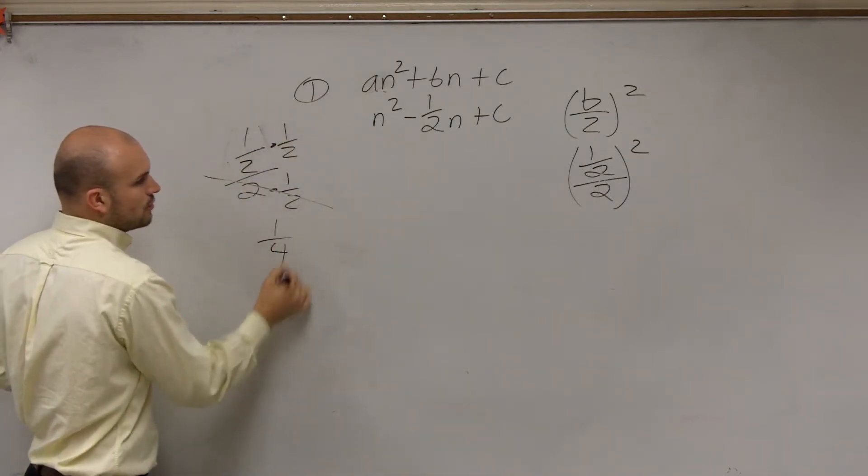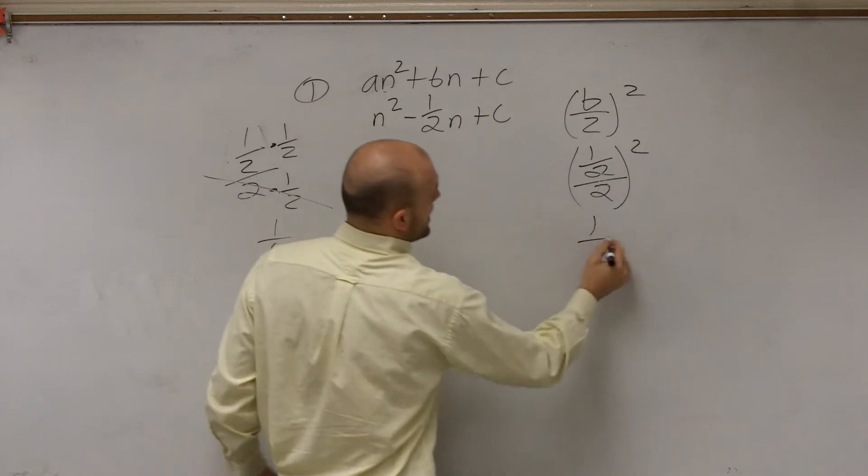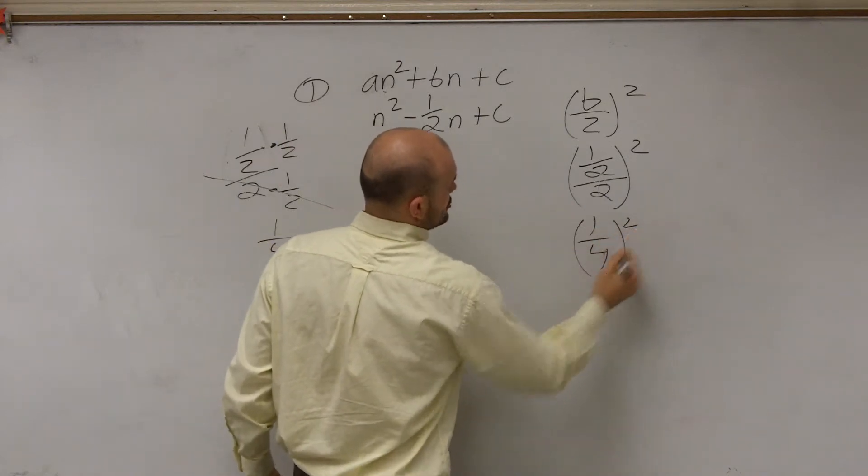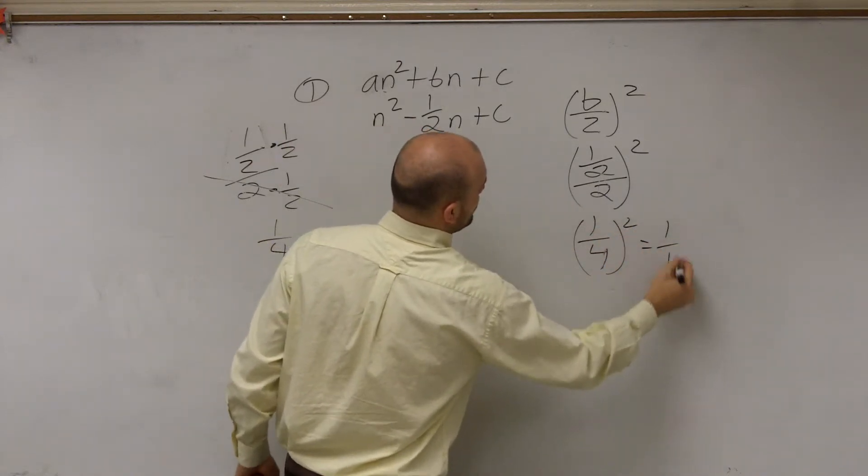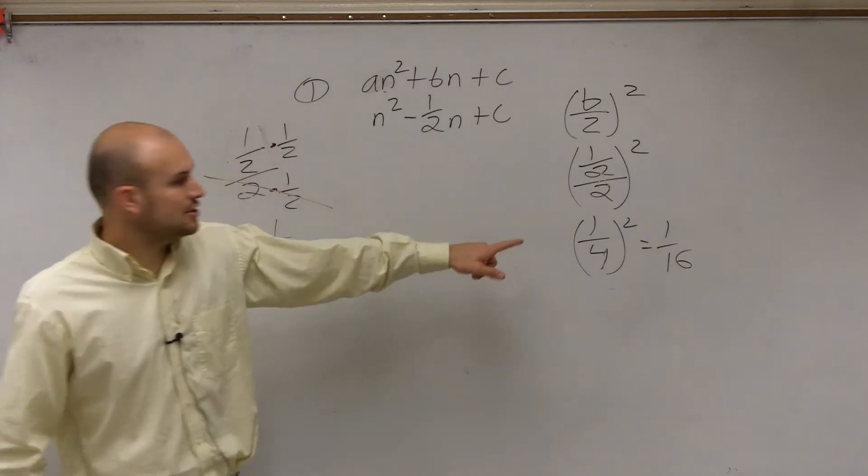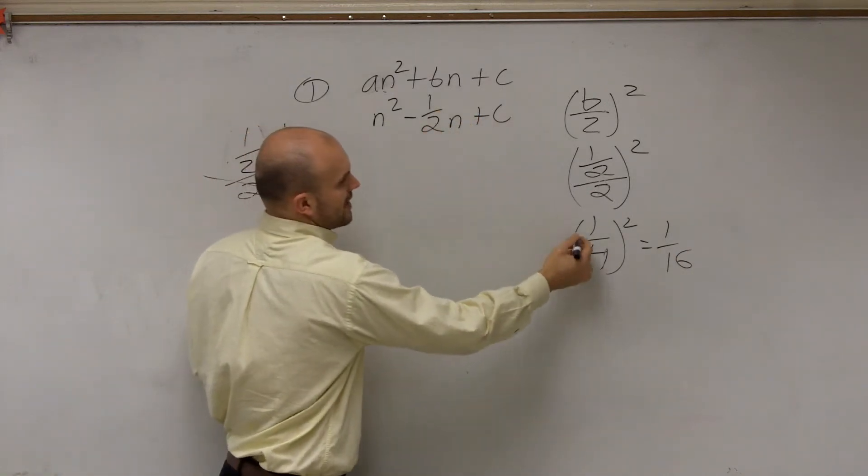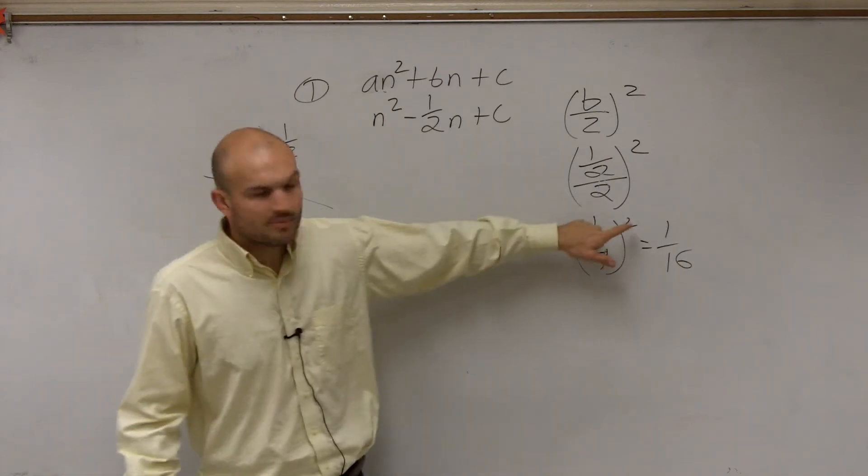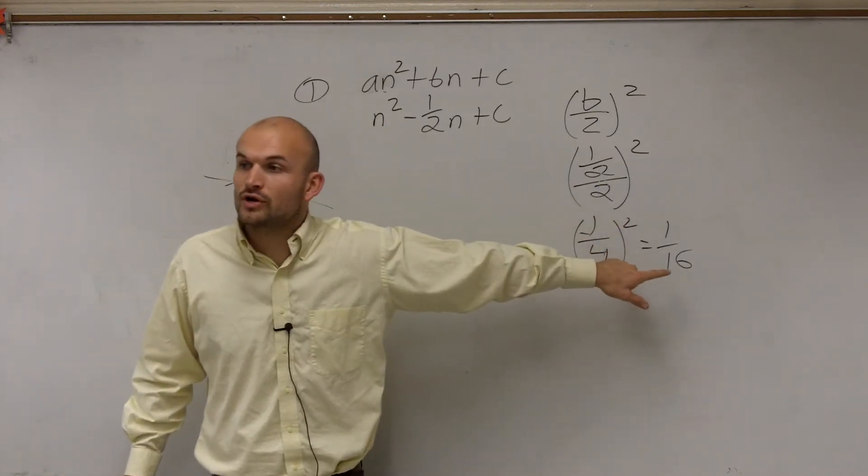1 half times 1 half is equal to 1 fourth. Therefore, I'm going to have 1 fourth squared, which equals 1 over 16. So the value, it's a negative 1 half, negative 1 fourth. But negative 1 fourth is still going to give you a positive 1 over 16.